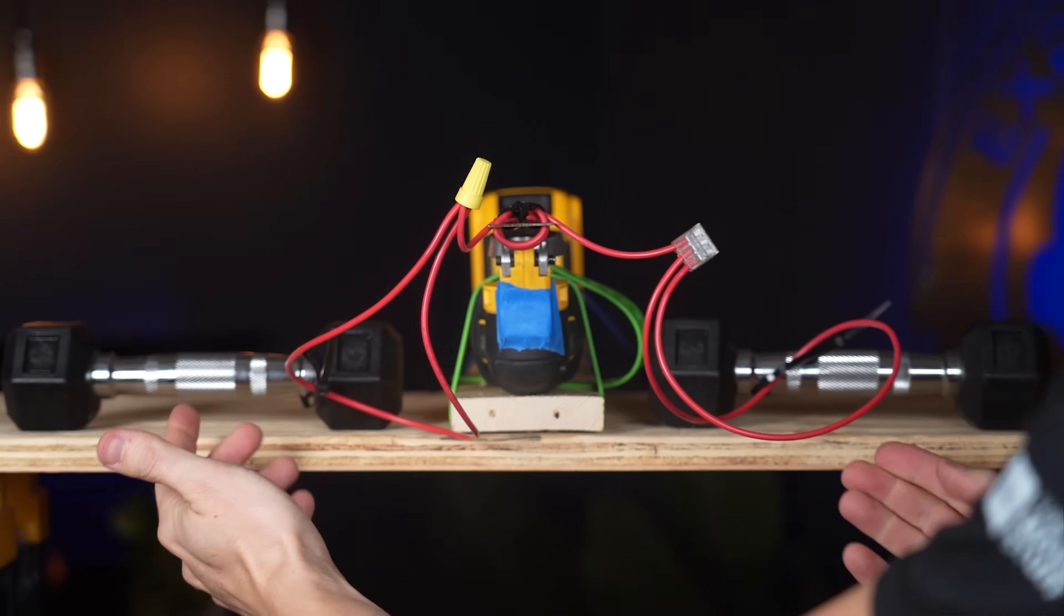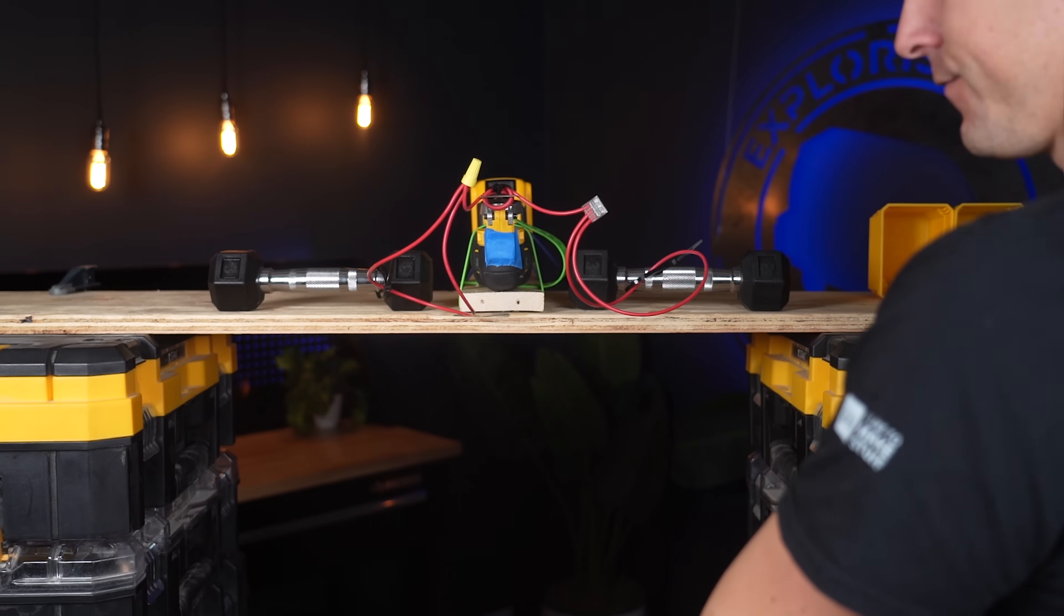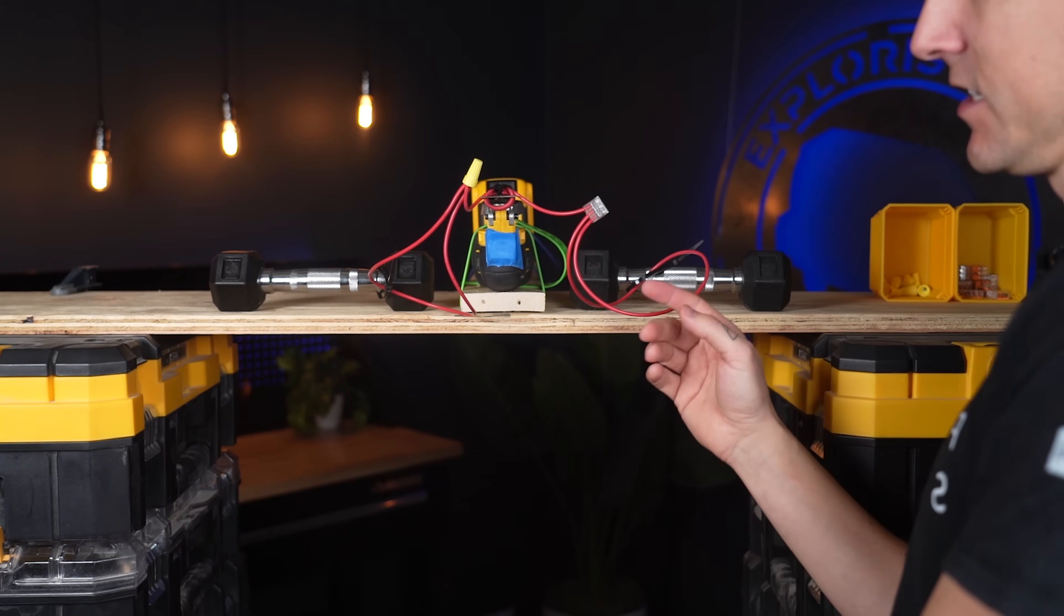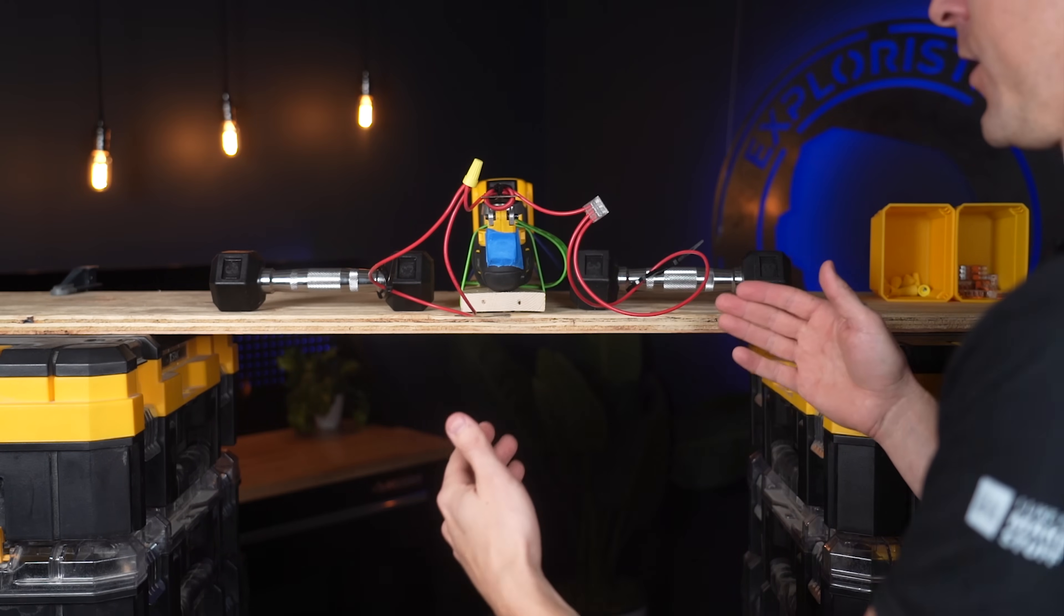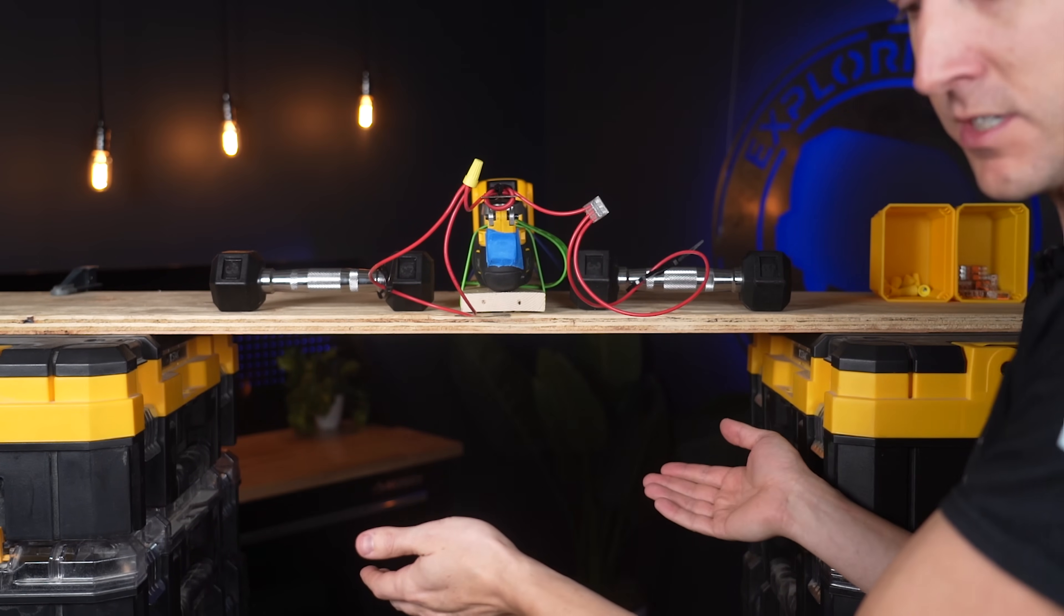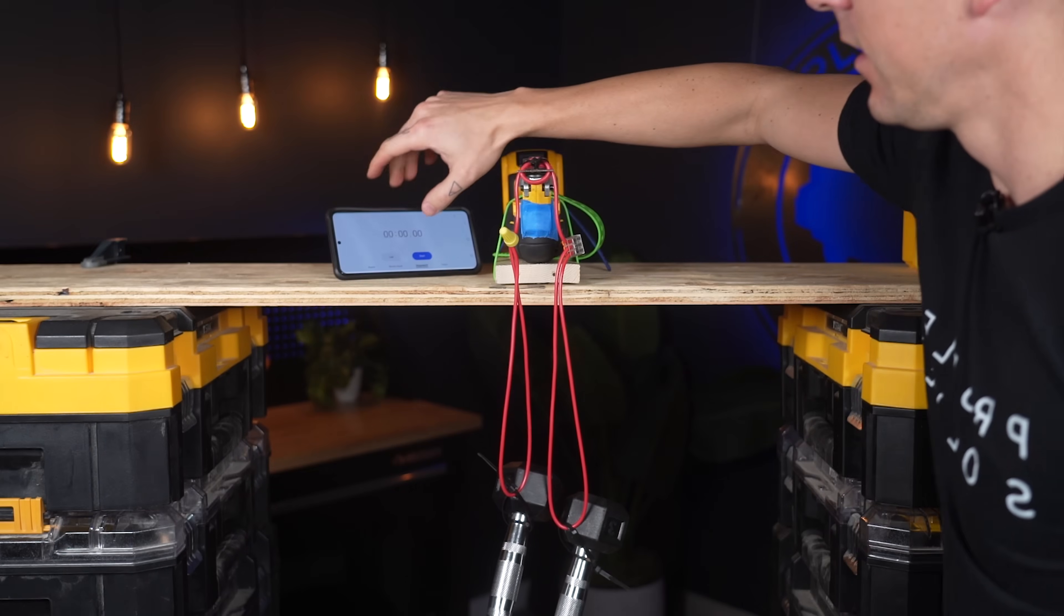I've got my weights over here on the side. We're going to let these hang off the front. Set up a stopwatch for one minute, just the number I kind of picked out. And we're going to test it. We're going to test it three times to see what happens. And start.